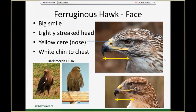A Ferruginous hawk often has a really distinctive looking face especially compared to other hawks you may encounter like red-tailed or Swainson's. Ferruginous hawks have a really large gape — a long mouth relative to these other hawks. You can see in these pictures how far that gape extends: from the tip of the beak it almost ends past the eye, and this huge grin is very distinctive on both light morph and dark morph Ferruginous hawks.